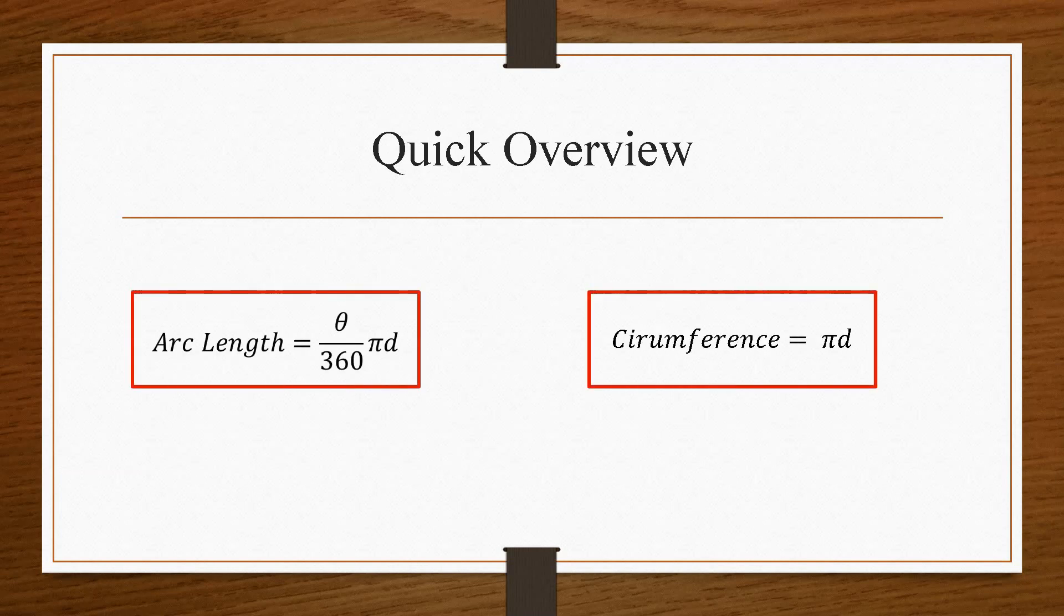So the two formulas that you have are the arc length, which is theta over 360 times pi times d. Now theta is the arc angle. And d is the diameter of the circle. And the circumference is just pi d. So that does not take into account the angle of the major or minor arc. That just takes into consideration the entire circle.